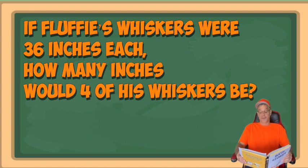Now, here's the first math question. If Fluffy's whiskers were 36 inches each, that's a yard, how many inches would four of his whiskers be if they were lined up in one straight row? Now might be a good time to pause the video to give yourself a chance to work.